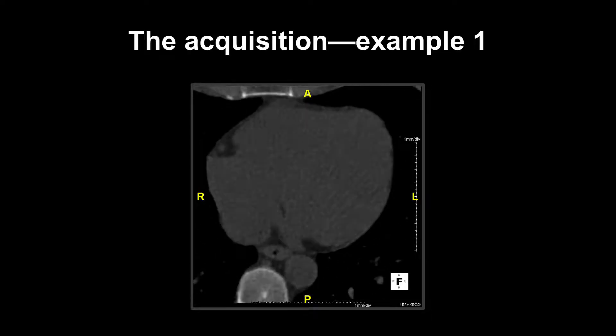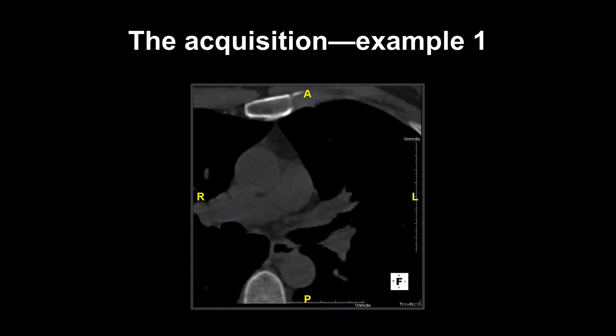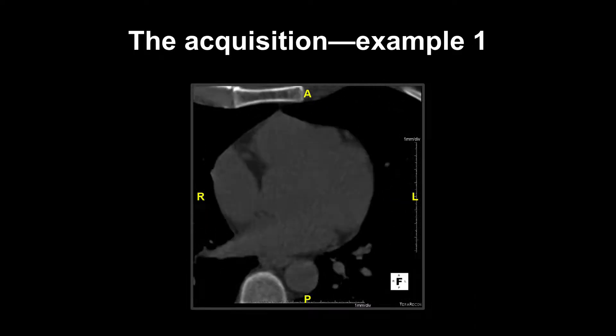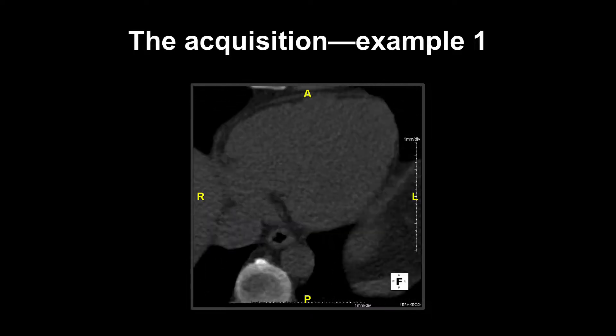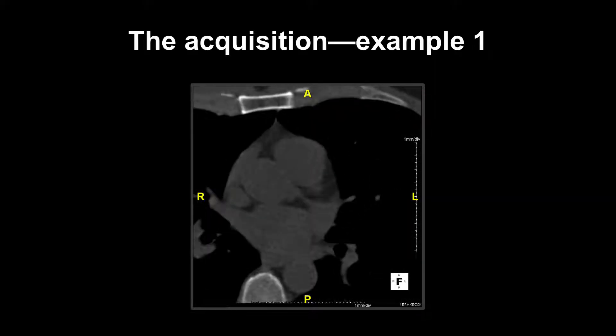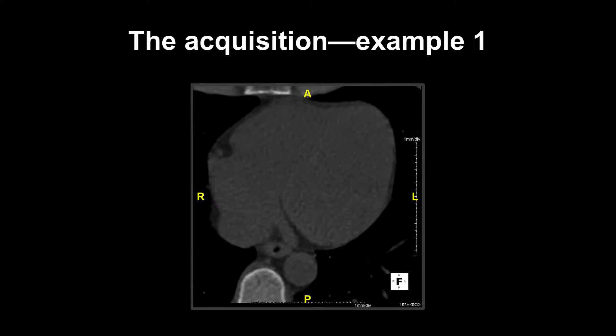This slide shows an example of a patient with no coronary artery calcium. When calcium is present, it appears similar to that seen in the spine and the sternum, and is depicted by a white colour.